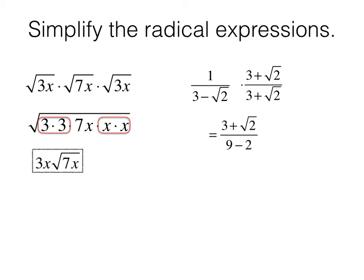Our denominator now, we're just going to apply the difference of perfect squares, will be 9 minus 2. We simplify this answer to be 3 plus root 2 all over 7. That answer is better because now there is not a square root in the denominator.